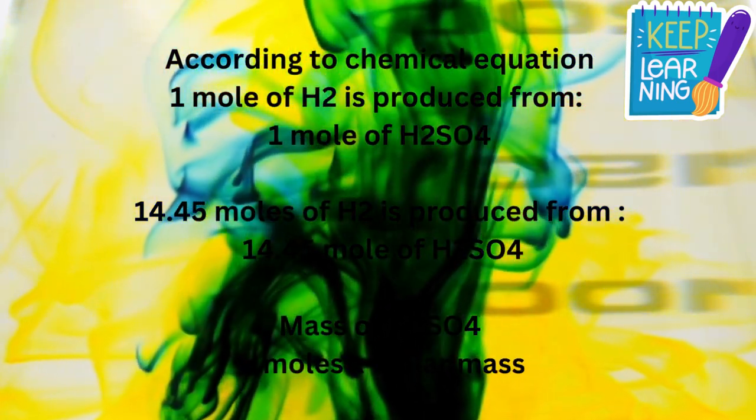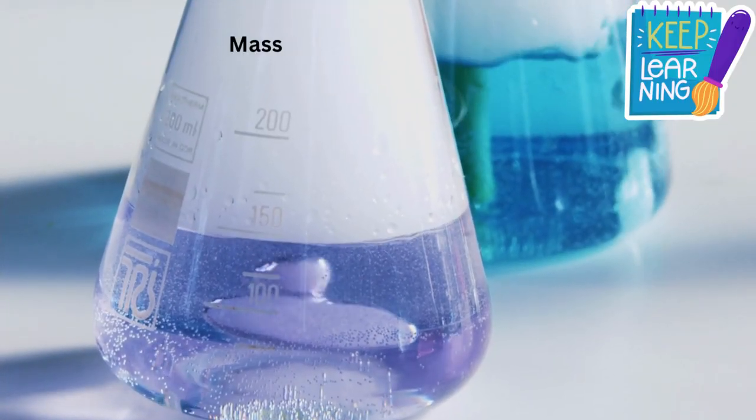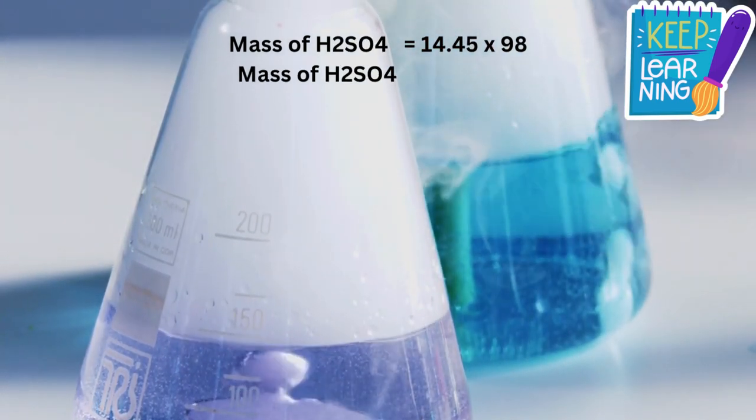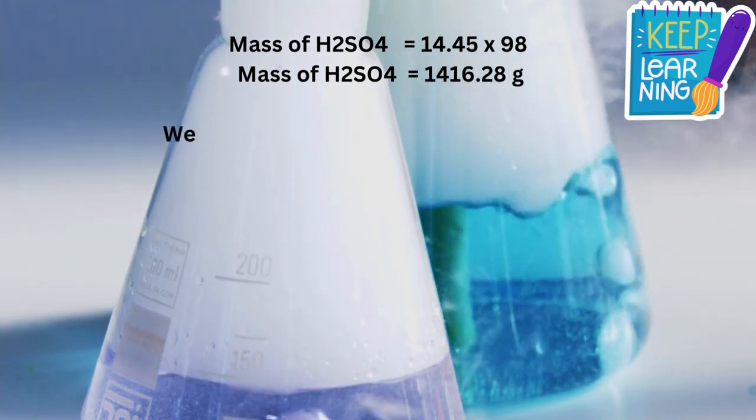Mass of H2SO4 equals moles times molar mass. Mass of H2SO4 equals 14.45 × 98. Mass of H2SO4 equals 1416.28 grams.